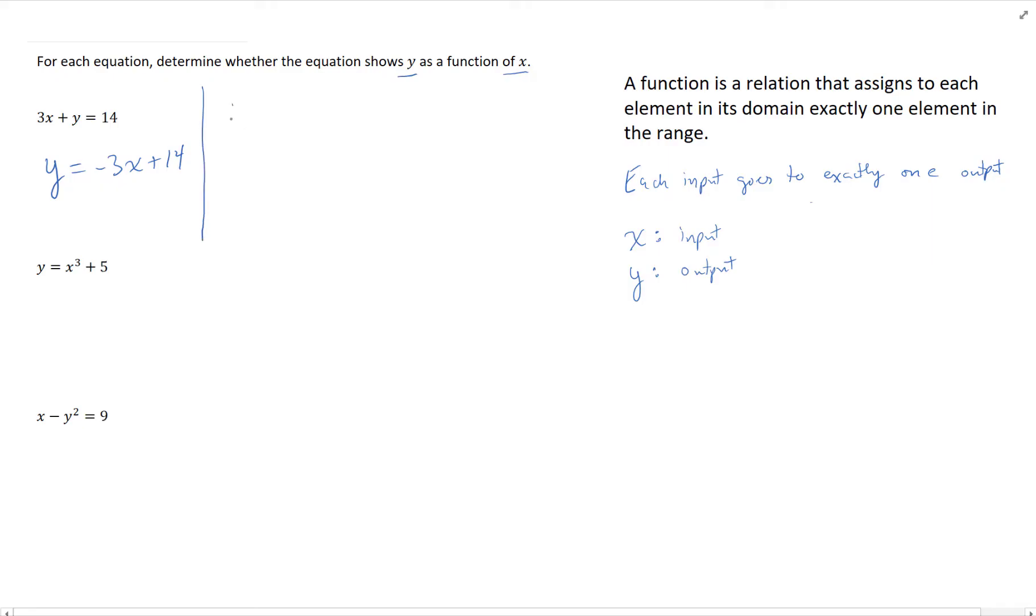For example, if x = 5, then y = -3(5) + 14. Following the order of operations, y = -1.